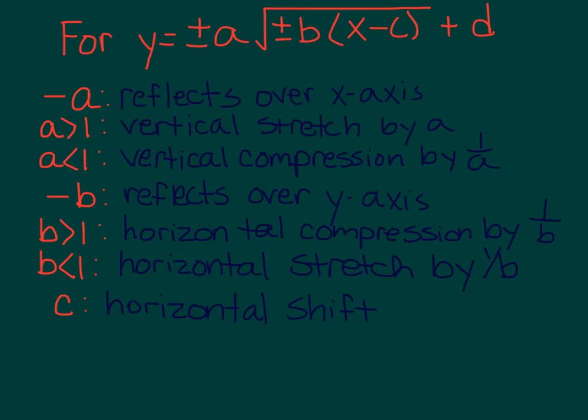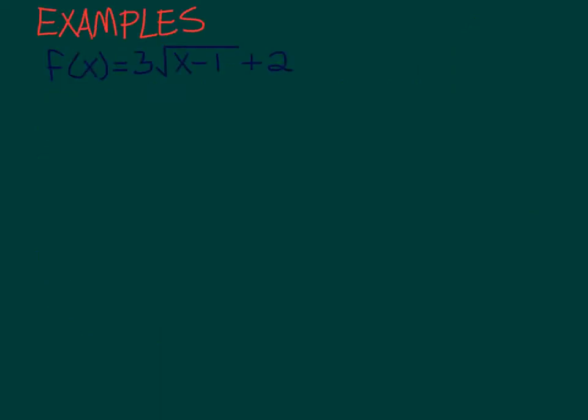The c value is your horizontal shift. A lot of times I'll use h instead, and remember minus h goes to the right, and plus h goes to the left. And the plus d, and sometimes I use plus k, but that represents your vertical shift, and it is pluses up and minuses down.